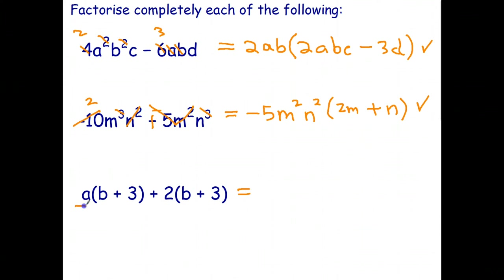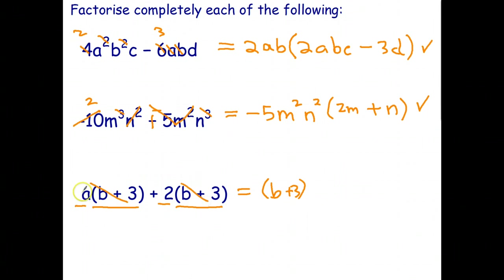Finally, this last one has a factor of (B + 3) — actually this is the same question as before. The common factor is (B + 3) in brackets. When I cross out the common factor, what's left behind is (A + 2). And there we go — that's a lesson on factorizing using the distributive law.